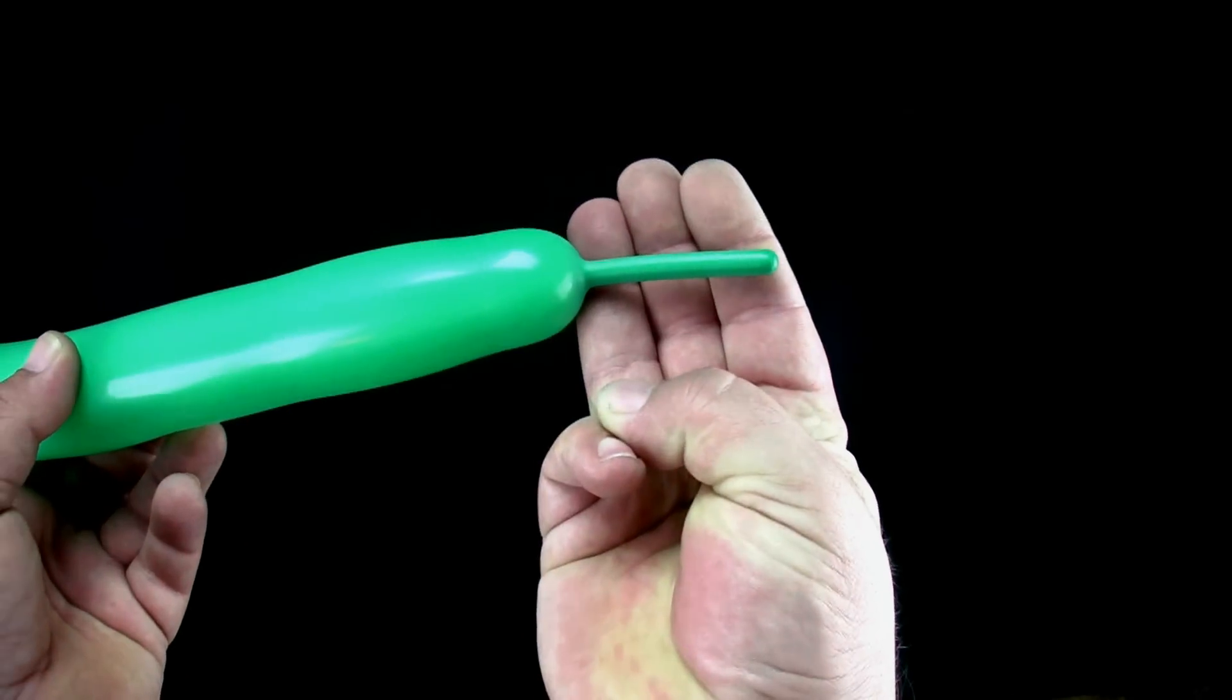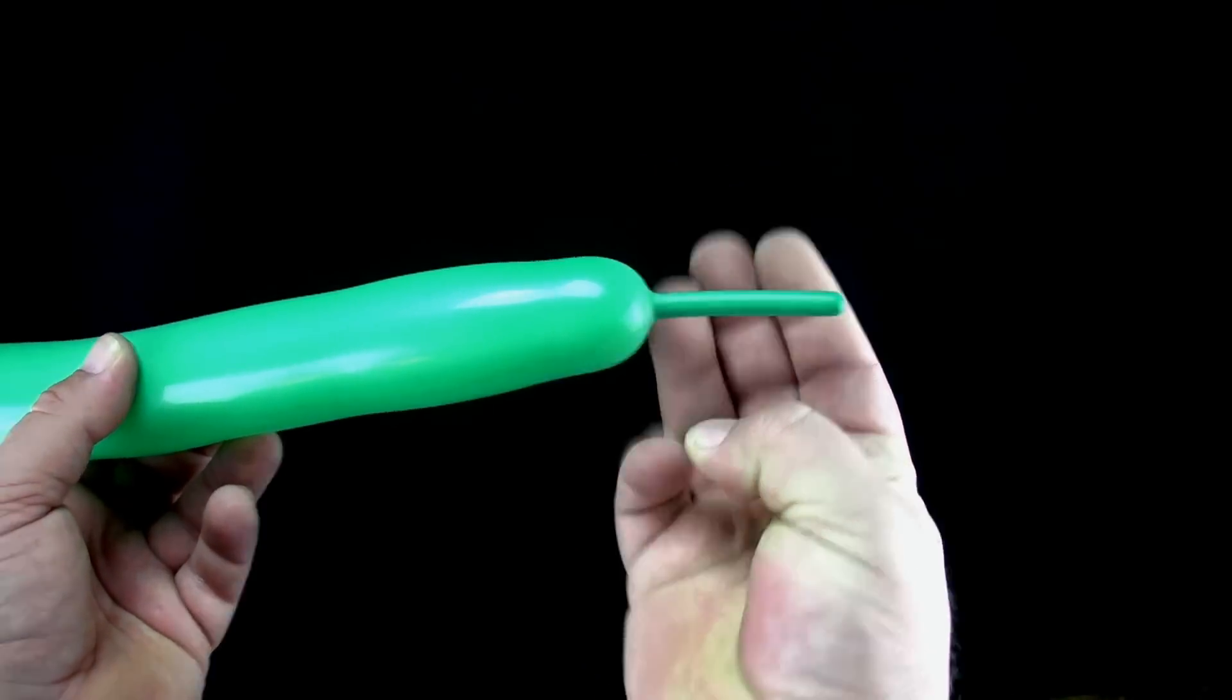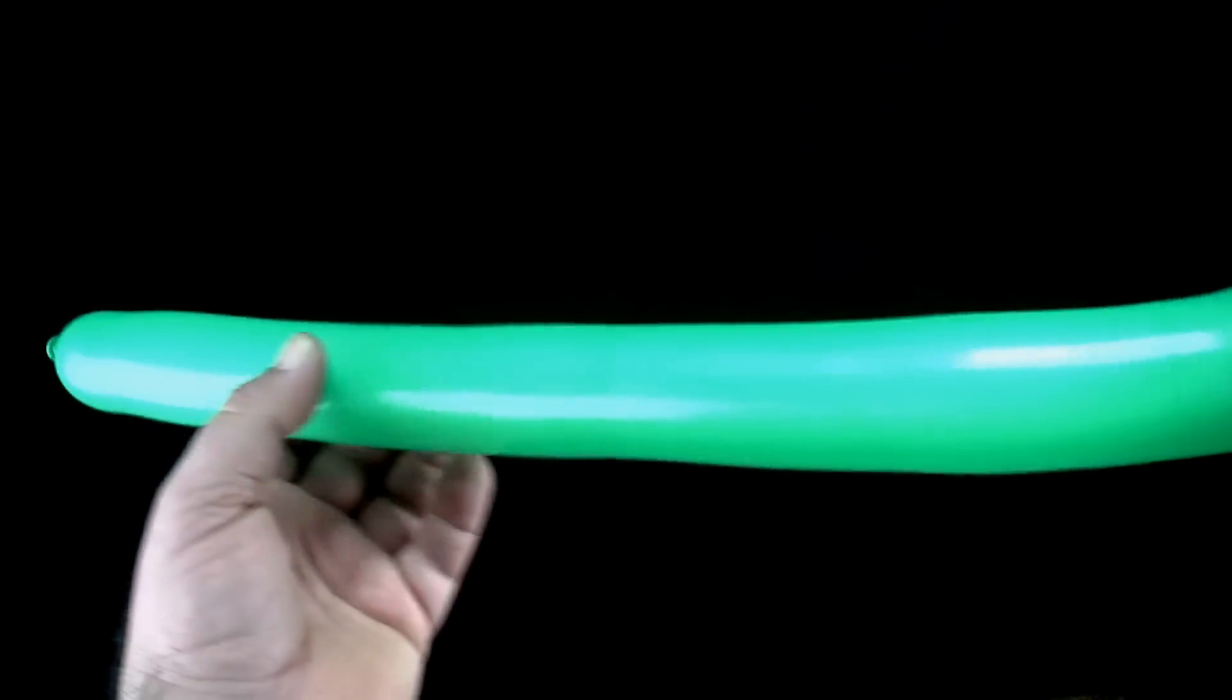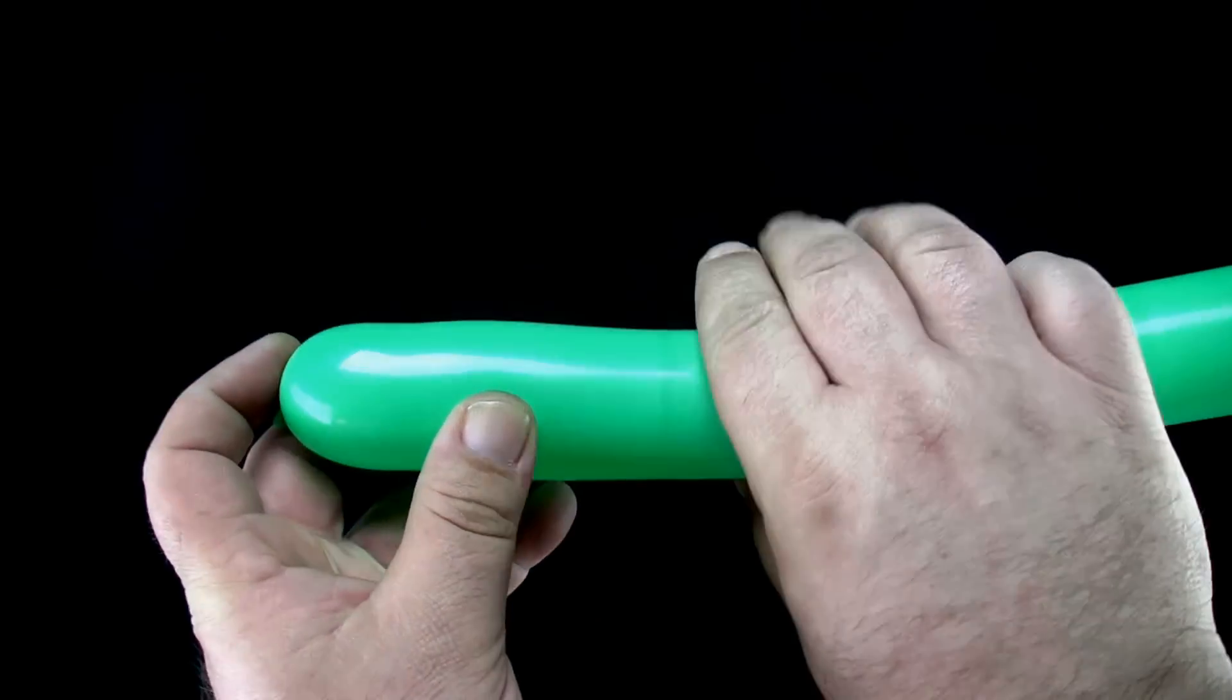You will want your balloon inflated with about three fingers width left over at the end. Start twisting your design at the nozzle end of the balloon.